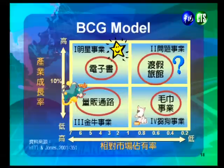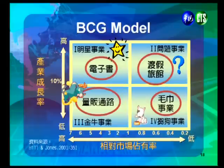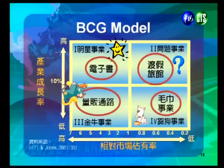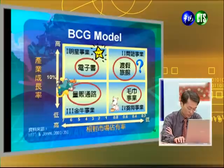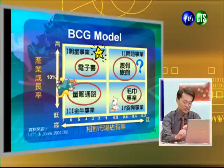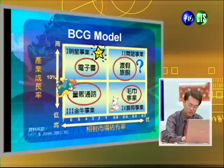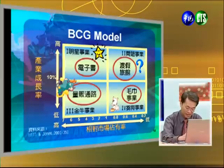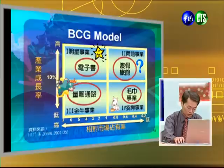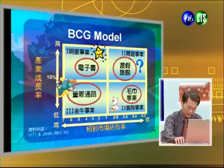第二個是金牛事業，成長率已降低但在產業中占有較大市占率，例如量販同路業。第三個是問題事業，雖處於高速成長的產業，但市占率非常低，例如旅館度假業。第四個是除狗，指在產業中成長率低且市占率也低的事業，例如國內的毛巾業，接下來請看一段新農毛巾蛋糕的影片。